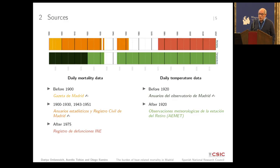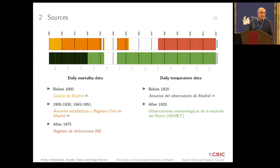The data. We are using individual-level data from the National Institute of Statistics from 1975 onwards. The previous data is typed — basically individual records from the civil register and other sources. We are working in Madrid, creating a longitudinal population register of the city of Madrid from 1890 onwards.